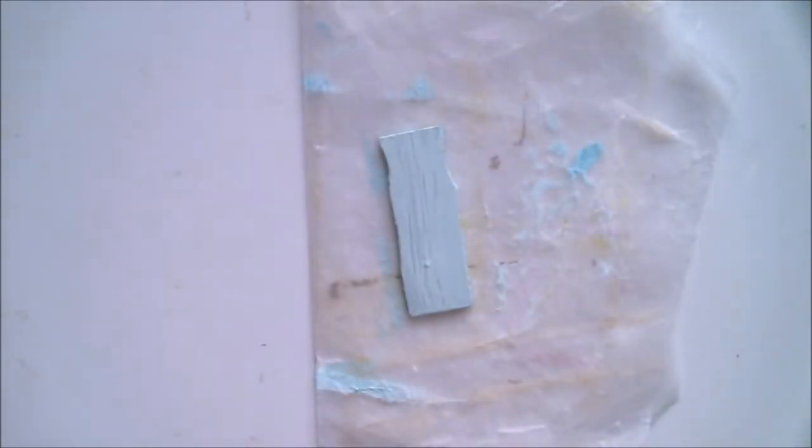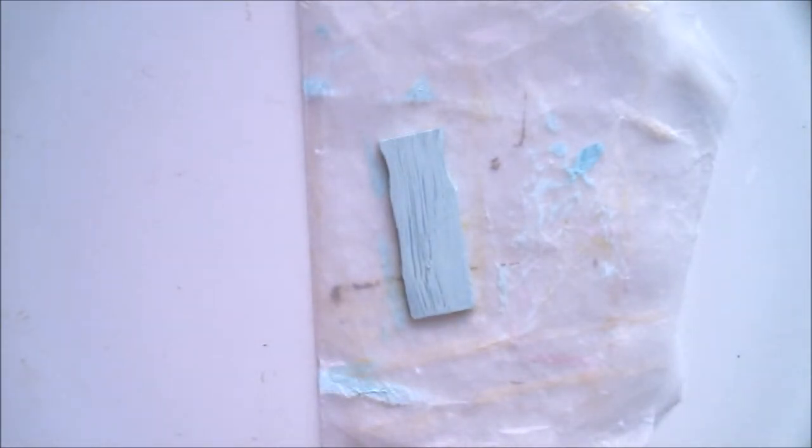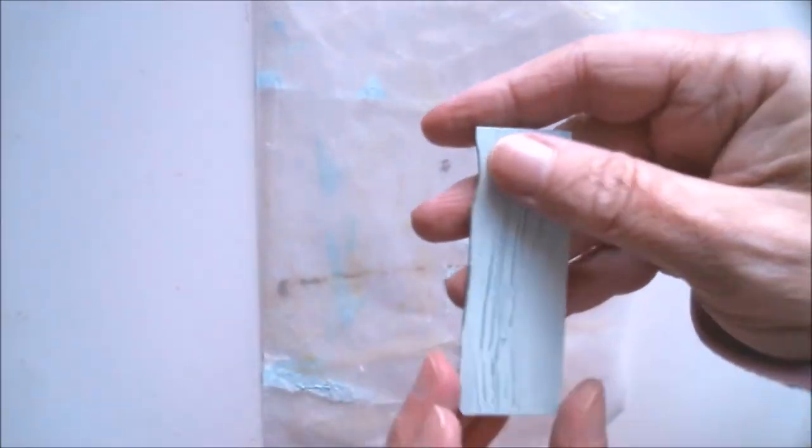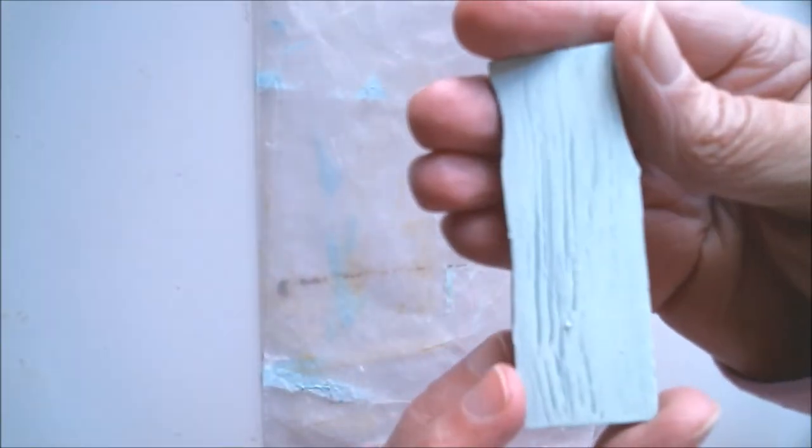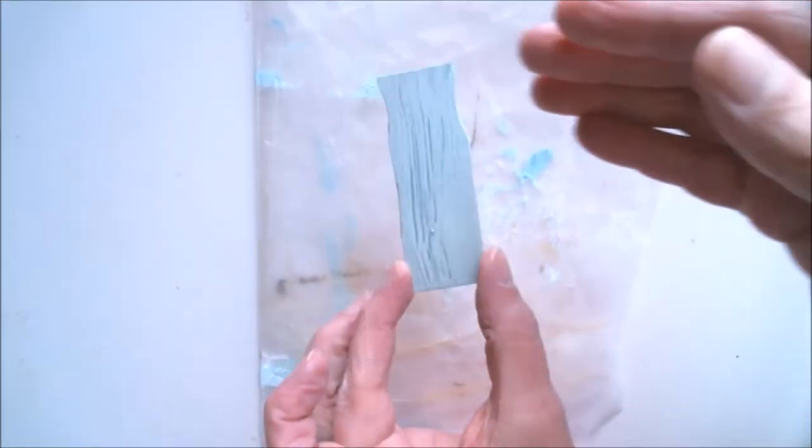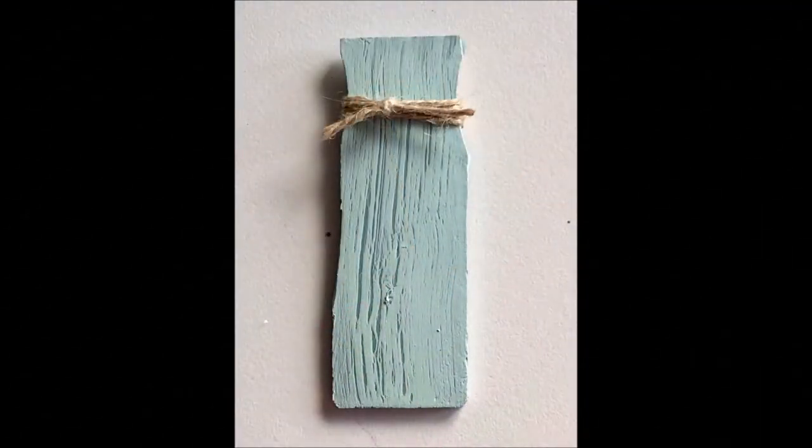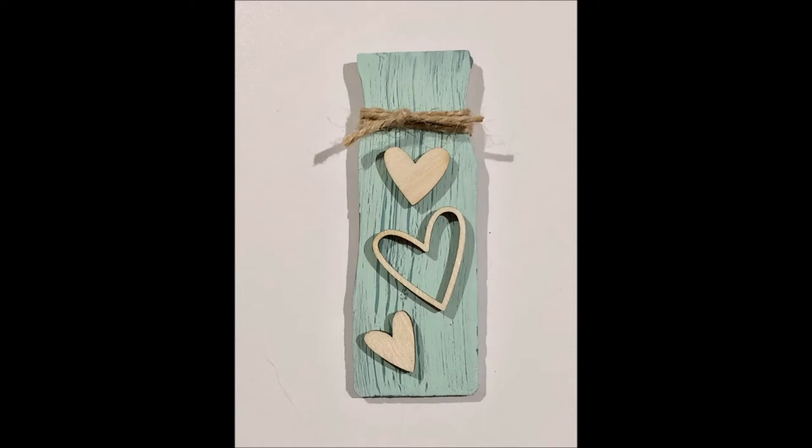And the cracks develop as it dries, so don't worry if you don't see a lot of cracks right away. If you want to learn more about this technique, I'll have a link below in the description box to my tutorial, and also a link on the screen as my video is ending. So to finish this off, I tied some twine around the top, and I added some wooden heart embellishments.